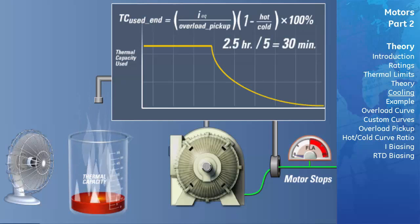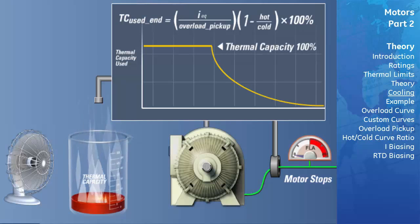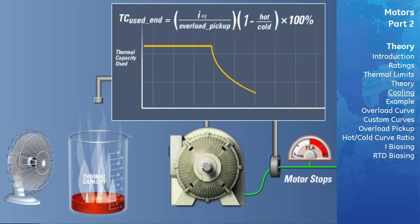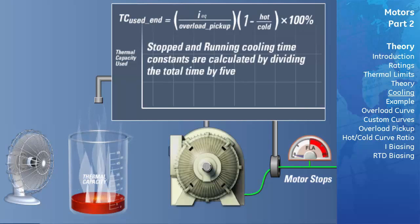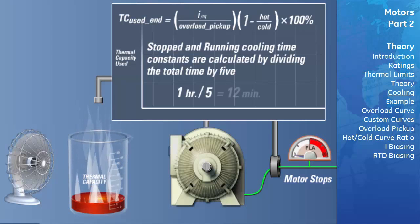When the motor is stopped, its thermal capacity used value will decay according to the same formula. If the thermal capacity used were at 100% before stopping the motor, it will take five time constants — or 2.5 hours — to decay, given a cooling time of 2.5 hours. The values to be entered for stopped and running motor cooling time constants can be calculated by dividing the stopped and running cooling times by five. For example, if the manufacturer states the running cooling time is one hour, then one-fifth of an hour, or 12 minutes, would be entered into the relay.